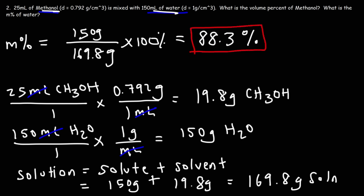If the problem asked for the mass percent of methanol, we would put 19.8 grams on top. If the problem doesn't specify which substance to use, identify the solute as the one in lower quantity. Here, methanol is in lower quantity than water, so methanol would typically be the solute. The way the question is worded tells you which substance to treat as the solute.